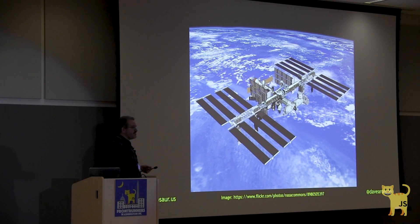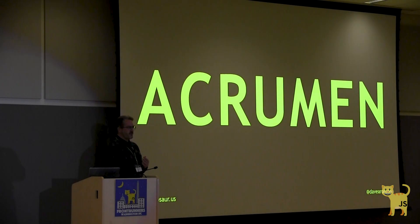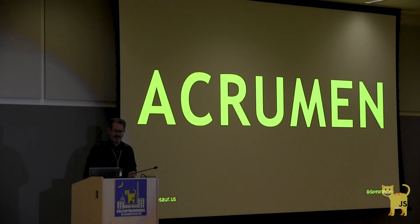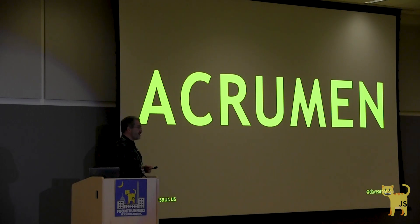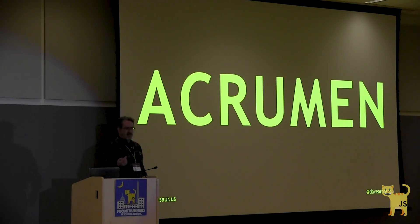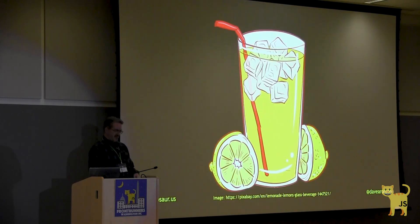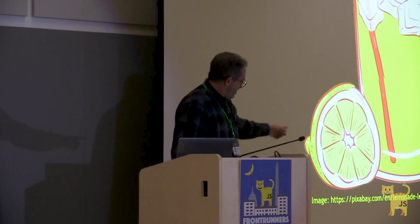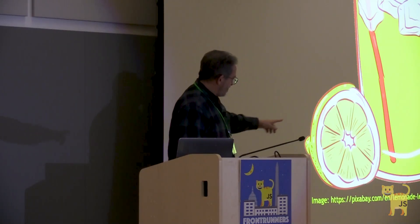I call this list of aspects ACRUMEN. Originally it was a Latin word meaning sour fruit such as grapefruits, limes, and of course especially lemons. That's why you'll see so much bright screaming lemon yellow throughout these slides — that's the official color of ACRUMEN.